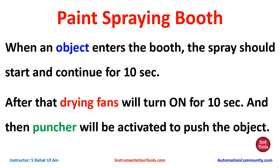There is a start button that will start the process, and then there will be a sensor that detects whether the object has entered the booth. If the sensor gets activated, the spray will start and spray the paint for 10 seconds on the object. After that, drying fans will turn on and dry the object for 10 seconds, and after drying the puncher will be activated to push the object.